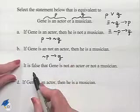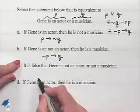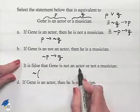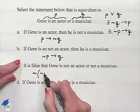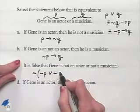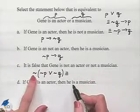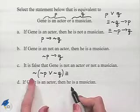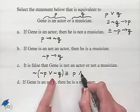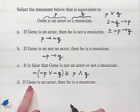It is false that Gene is not an actor or not a musician. We can denote that by putting the negation symbol and a set of parentheses. Gene is not an actor would be not P, or Gene is not a musician would be not Q. I'm now going to use De Morgan's laws in order to take the negation and put it inside the parentheses. In essence, that's going to give us the negation of not P, which is going to be P, and the negation of not Q, which is going to be Q.